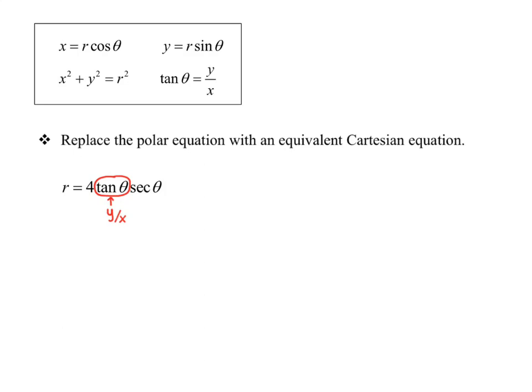Now secant theta — we have to remember from trig — is one over cosine theta, and we can figure out an xy equation for cosine theta, or at least an xr equation. So I'll start by just replacing tan theta with y over x and the secant with one over cosine theta, giving r equals four times y over x times one over cosine theta.